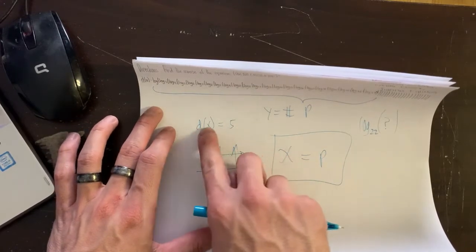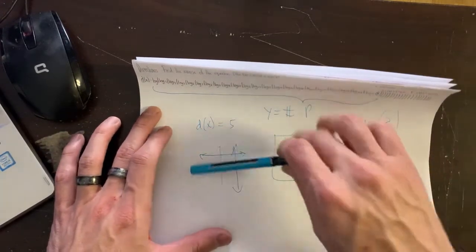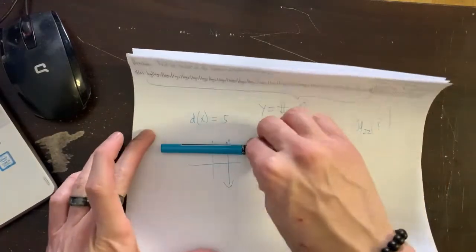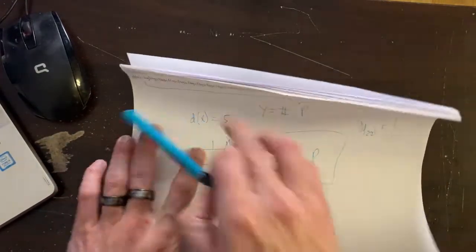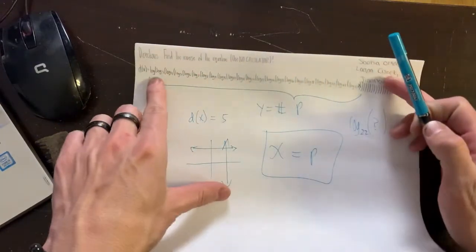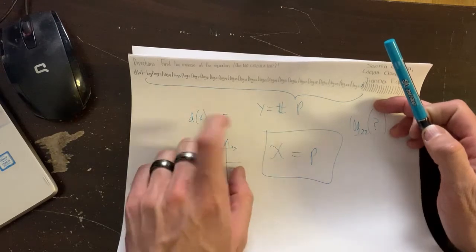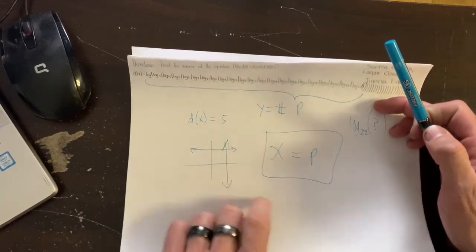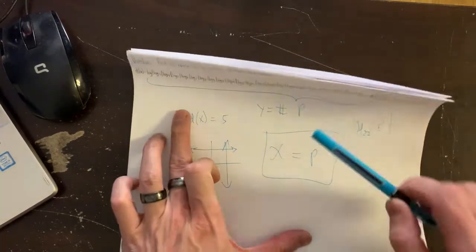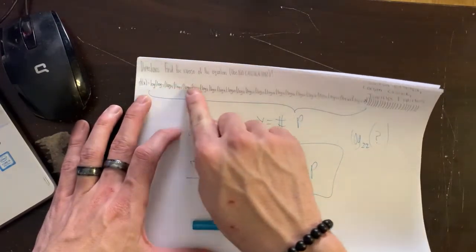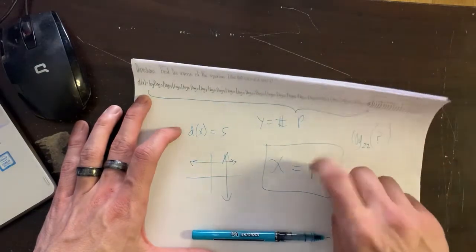What does the graph of Y equals five look like? It's a horizontal line. And they want the inverse, right? Now, the inverse of a horizontal line is a vertical line. So this guy here, this is basically like Y equals some number P. And so the inverse of Y equals a number P would be X equals P. So I'm calling this my answer, X equals P, where P is all of this here, right there.